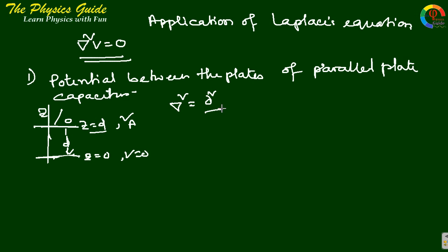Del square equals to del squared del z squared in one dimension. For three dimensions, it's del squared del x squared plus del squared del y squared plus del squared del z squared. But since this is a one-dimensional problem, just take del square as del squared del z squared. So Laplace equation converts to del squared V del z squared equals to 0.